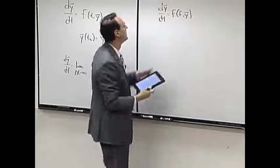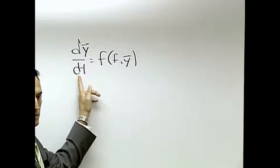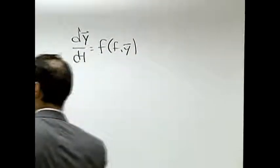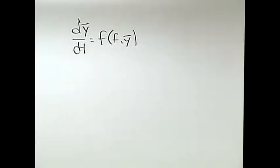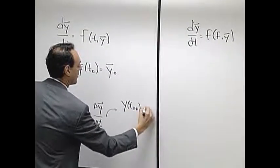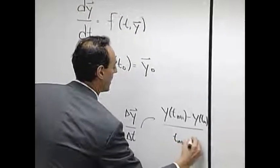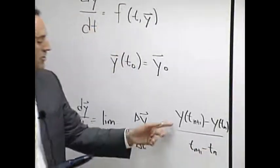What I'm going to do is say well I can't really calculate this so I'll calculate something close. What I'll do is I'll take this thing here and this thing here is something like y of t of n plus 1 minus y of t of n over t of n plus 1 minus t of n. So I've discretized my space and time.